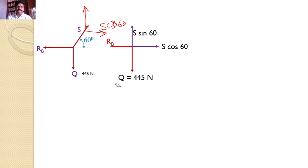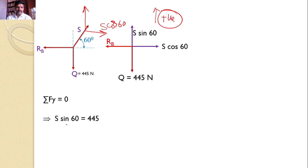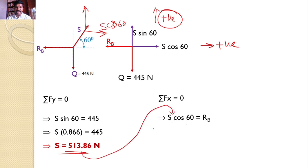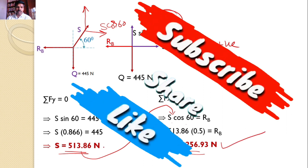RB is along the X axis, so it can be taken as is. Applying the equilibrium equation sigma Fy equals 0, taking the upward direction as positive: S sin 60 equals 445, so S into 0.866 equals 445, giving S equal to 513.86 newtons. Similarly, applying sigma Fx equals 0, taking rightward as positive: S cos 60 equals RB. Substituting S equal to 513.86 and cos 60 equal to 0.5, we get RB equal to 256.93 newtons. These two are the answers for this problem.